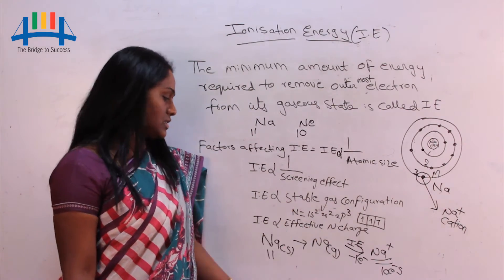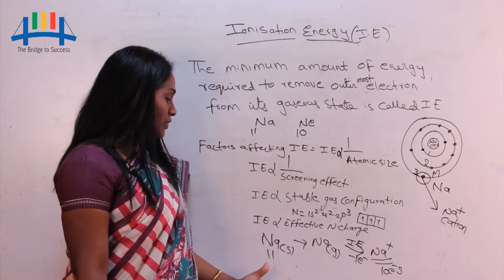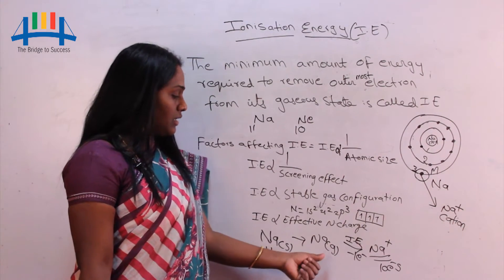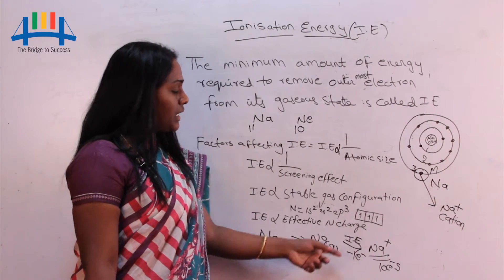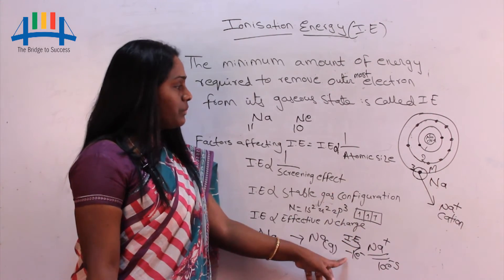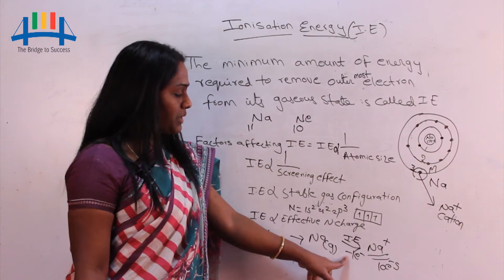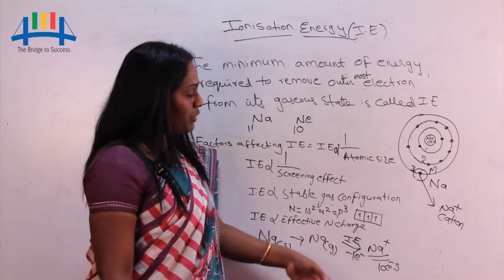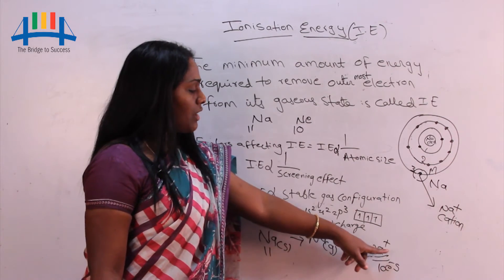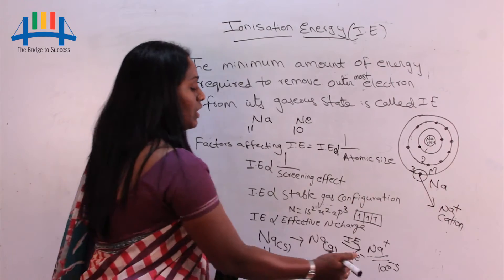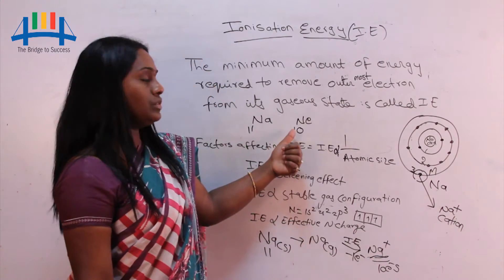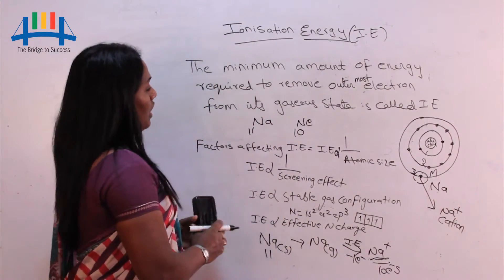To remove this electron, we first have to convert sodium from its solid or liquid state to its gaseous state. Sodium with 11 electrons is the neutral element. From its solid state we convert it into gaseous state, then we apply a little amount of energy — called ionization energy — and remove this outermost valence electron. After removing it we get Na⁺, which is sodium after losing one electron, with 10 electrons, making it equal to neon.